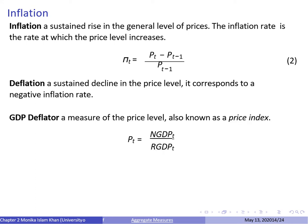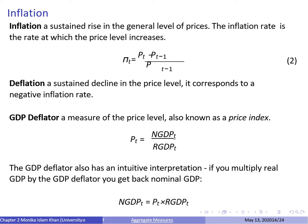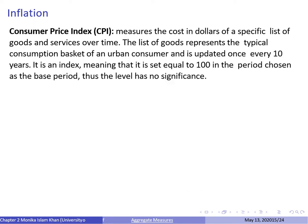There are different ways of calculating the price level. One is the GDP deflator, a price index equal to nominal GDP divided by real GDP. It has an intuitive interpretation: multiplying real GDP by the GDP deflator gives you back nominal GDP. Another measure is the consumer price index or CPI, which measures the cost in dollars of a specific consumption basket of goods and services over time. This list is updated once every 10 years. As an index, it equals zero in the base period, so the price level itself has no significance — but it allows comparison between base year and current year prices.